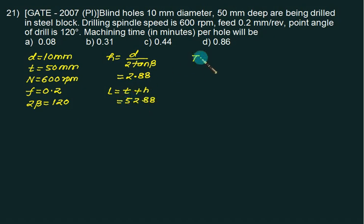Time equals L upon FN. L is 52.88mm, feed is 0.2mm/rev, N is 600 RPM. This gives 0.44 minutes. Answer exactly matches.